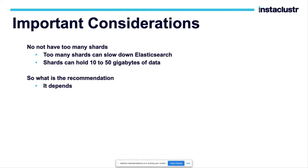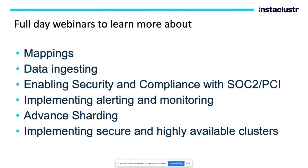An important consideration before finishing: don't put too many shards. The recommendation is to have 10 to 50 GB of data per shard. Every dataset has its own characteristics for distribution — you cannot use one method for every type of data, so some data will have more shards than others. A full-day workshop is planned to cover all big topics like searching, mapping, data ingestion, and security in detail.